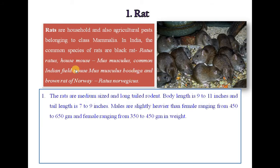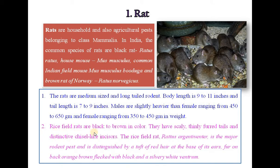Rats are medium-sized and long-tailed rodents. Body length is 9 to 11 inches and tail length is 7 to 9 inches. Males are slightly heavier than females, ranging from 450 to 650 grams, and females ranging from 350 to 450 grams in weight. Rice field rats are black through brown in colour. They have a scaly, thinly furred tail and distinctive chisel-like incisors. The rice field rat (Rattus argentiventer) is the major rodent pest and is distinguished by a tuft of red hair at the base of its ear.